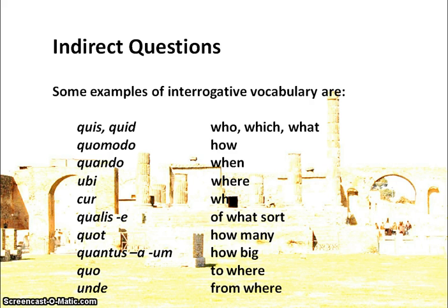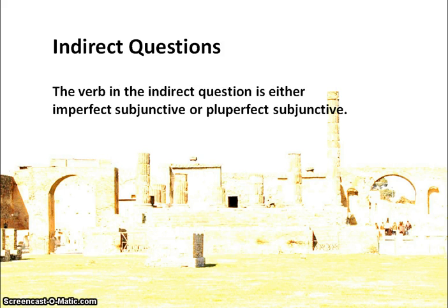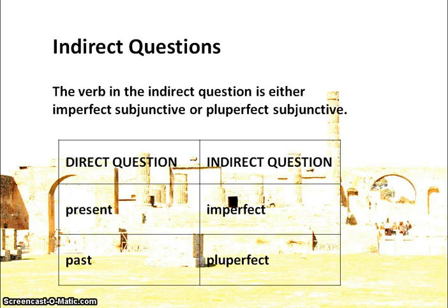Learning the interrogative vocabulary is a big part of indirect questions. The verb in the indirect question is either imperfect or pluperfect subjunctive, determined by the tense of the original direct question. If the original question was present tense, we use the imperfect subjunctive; if the direct question was past tense, we use the pluperfect subjunctive.